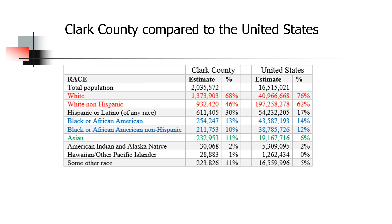In terms of race and ethnicity, Clark County is dramatically different than the United States. If we look at the white non-Hispanic population in Clark County, only 46% is white non-Hispanic compared to 62% nationally. Here in Clark County, 30% of the population is of Hispanic or Latino origin, compared to only 17% nationally. Oddly enough, the Black African-American population in Clark County is lower than the national average, but the Asian population is almost twice as large as the national average.